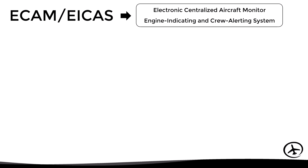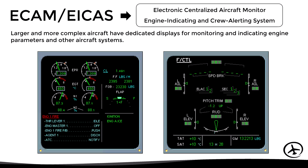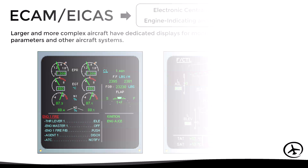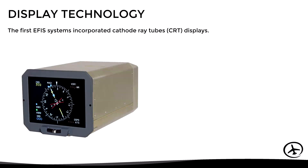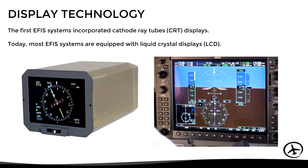In larger and more complex aircraft, we can find displays such as the ECOM or the ICAS, which are dedicated displays for monitoring and indicating engine parameters and other aircraft systems. Regarding display technology, the first EFIS systems used cathode ray tubes. However, today most EFIS systems are equipped with liquid crystal displays, which are much more efficient and reliable.